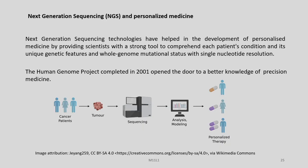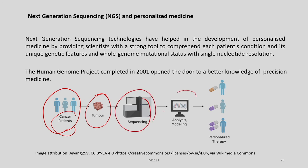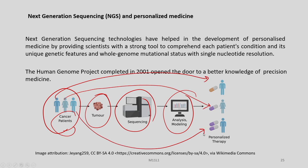Let us briefly have some idea about NGS technologies, which have helped in the development of personalized medicine by providing scientists with a strong tool to comprehend a patient's condition, its unique genetic features, and the whole-genome mutational status with single nucleotide resolution. The human genome project was completed in 2001 and opened the door to a better knowledge of precision medicines. For example, if we have a particular person with a particular disease such as cancer, we take out the tissue — in this case the tumor — subject it to sequencing, then perform analysis and modeling. Depending on the different individuals, we may have the option of prescribing different cancer drugs, as exemplified by drugs like Herceptin.